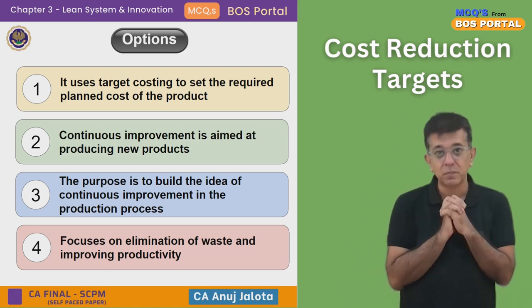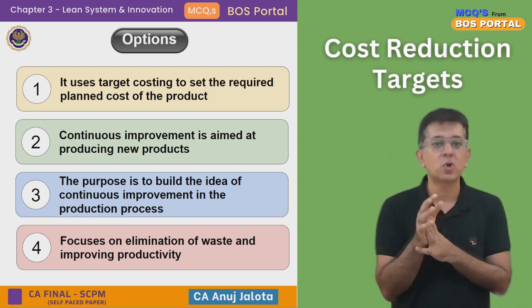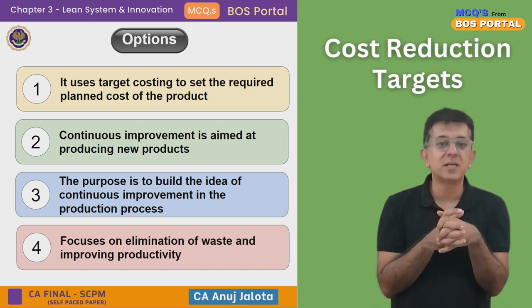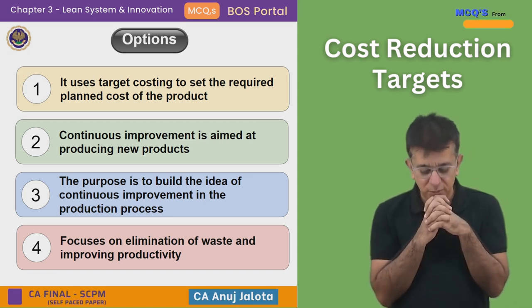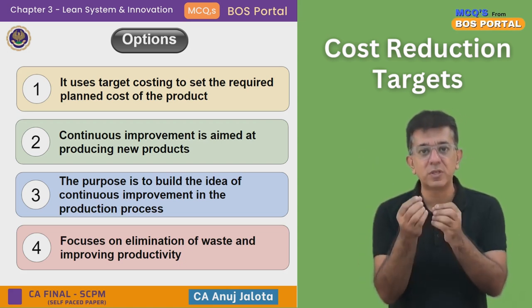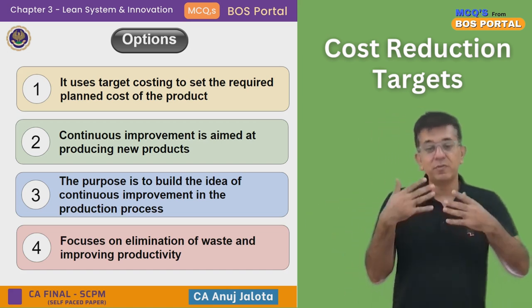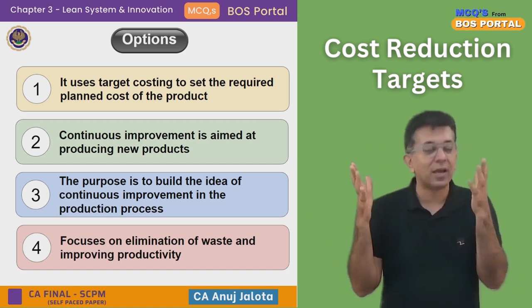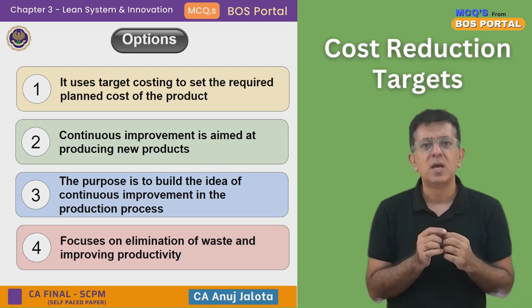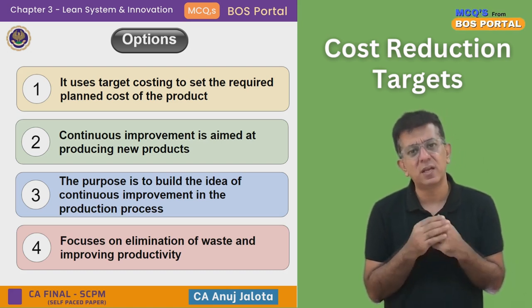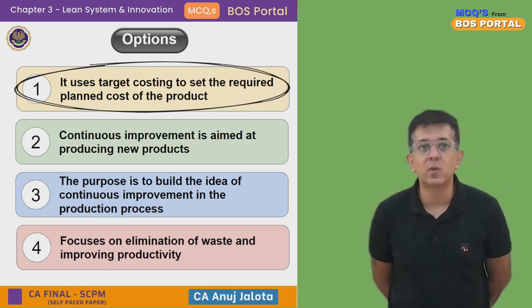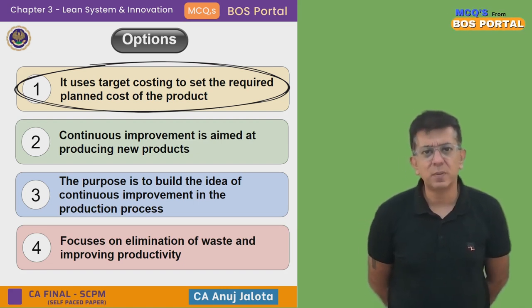In Kaizen Costing, we try to have cost reduction targets. In standard costing, if your standard cost is 5, you want the actual cost to also be 5. But under Kaizen Costing, if the cost is 5, you aim to reduce it to 4.9 next quarter, then 4.75 the quarter after, and so on. We try to have cost reduction targets — not drastic innovation, but making the process better by gradually reducing cost over time.